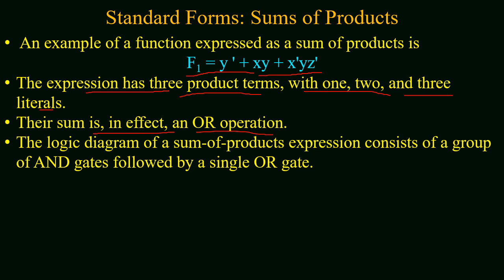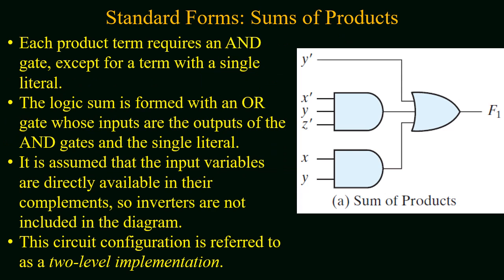The logical diagram of sum of product expression consists of a group of AND gates followed by a single OR gate. In the previous example, each product term requires an AND gate except for the term with a single literal. The logical sum is formed with an OR gate whose inputs are the outputs of the AND gates and the single literal. Input variables are assumed directly available in complemented form, so inverters are not included. The circuit configuration is referred to as two-level implementation: at first level AND operation is performed followed by OR operation. This is the basic benefit of sum of product or product of sum forms.